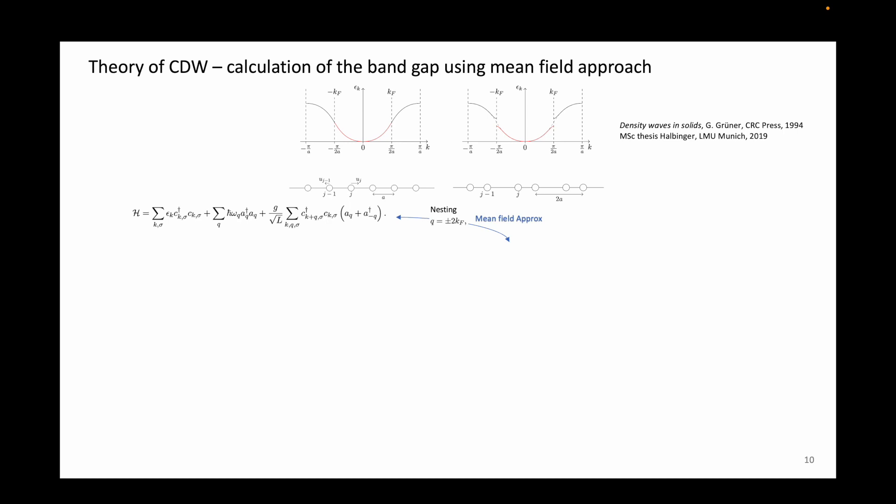These derivations are taken from a master's thesis by Halbinger, but I also recommend looking into a textbook called Density Waves in Solids by George Gruner. However, since the assumption used in this derivation doesn't hold for charge density waves in 2D materials, I will just briefly go over the derivation. We start off with the Frölich's Hamiltonian. We apply a so-called Fermi surface nesting condition, where we only consider the q equal to twice the Fermi vector. We will come to this condition later. We also apply the mean field approximation to get this formulation.